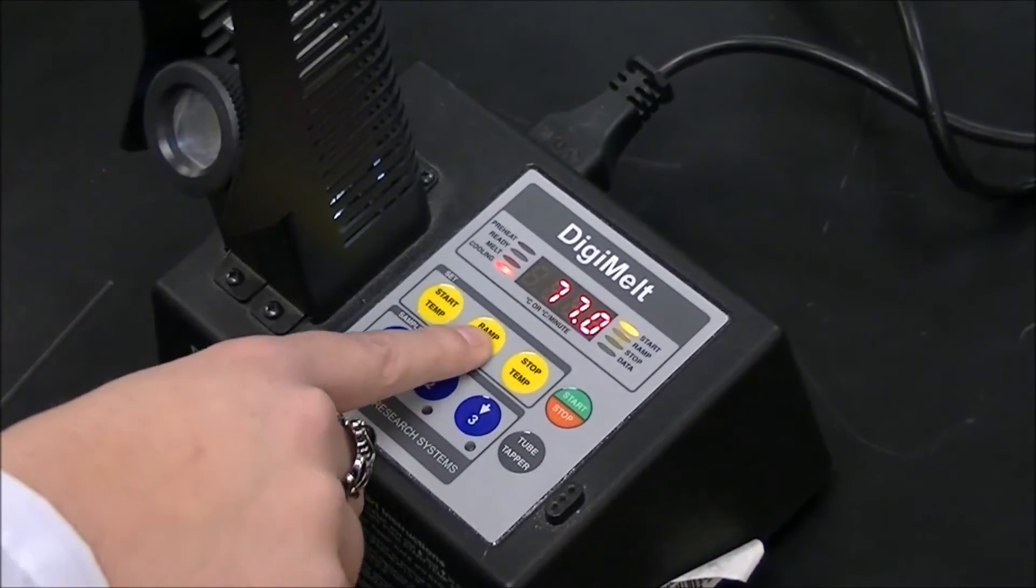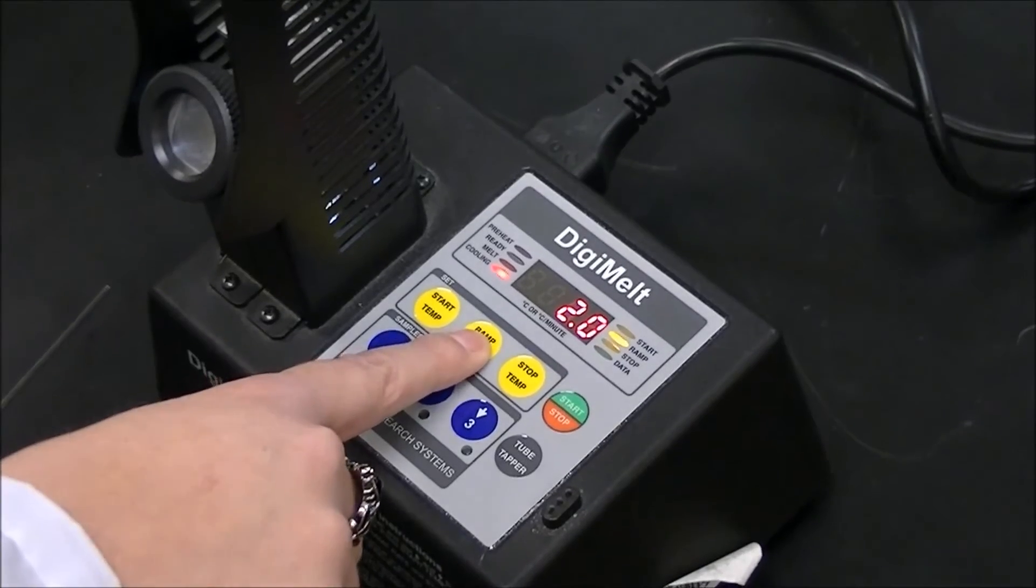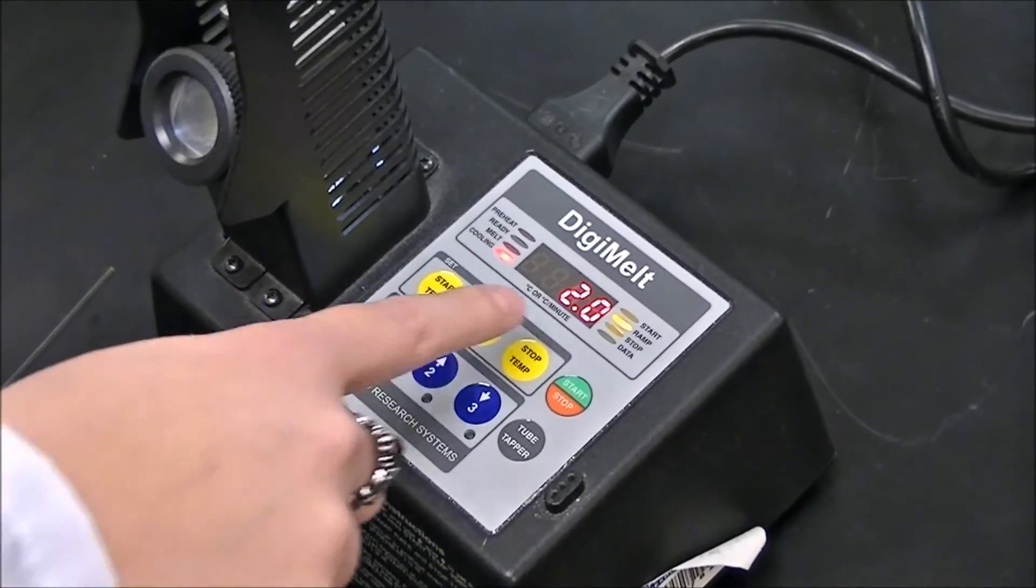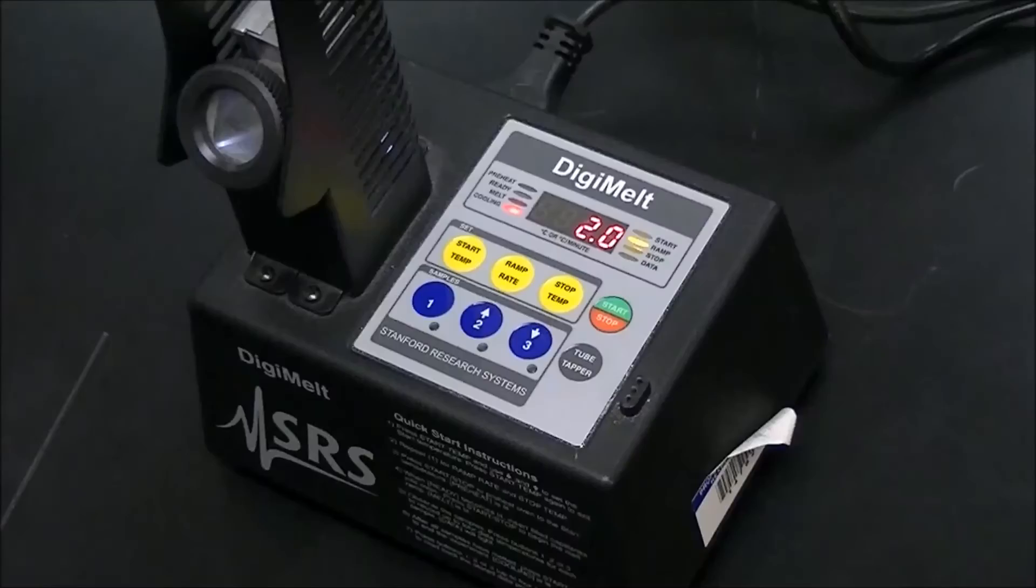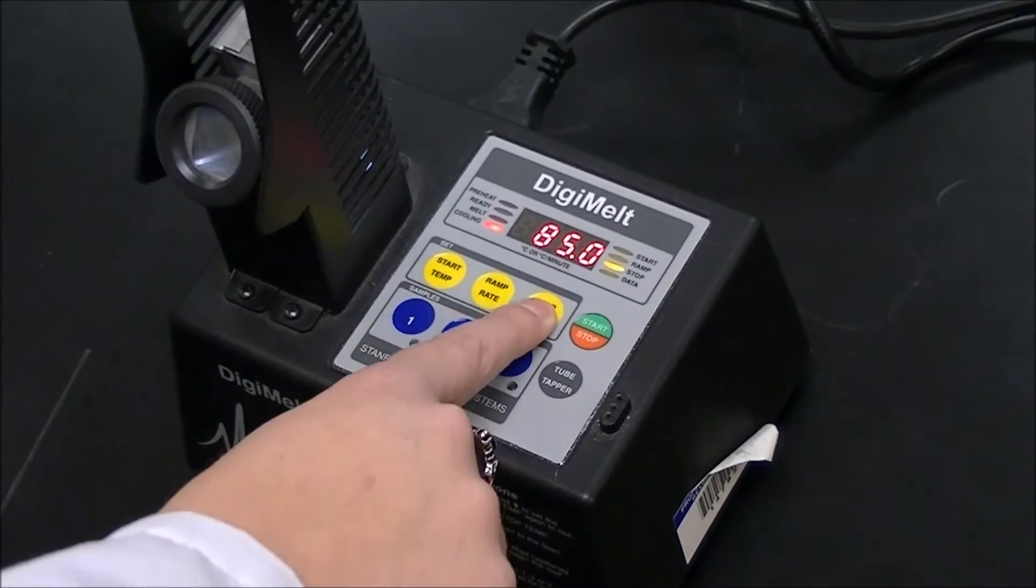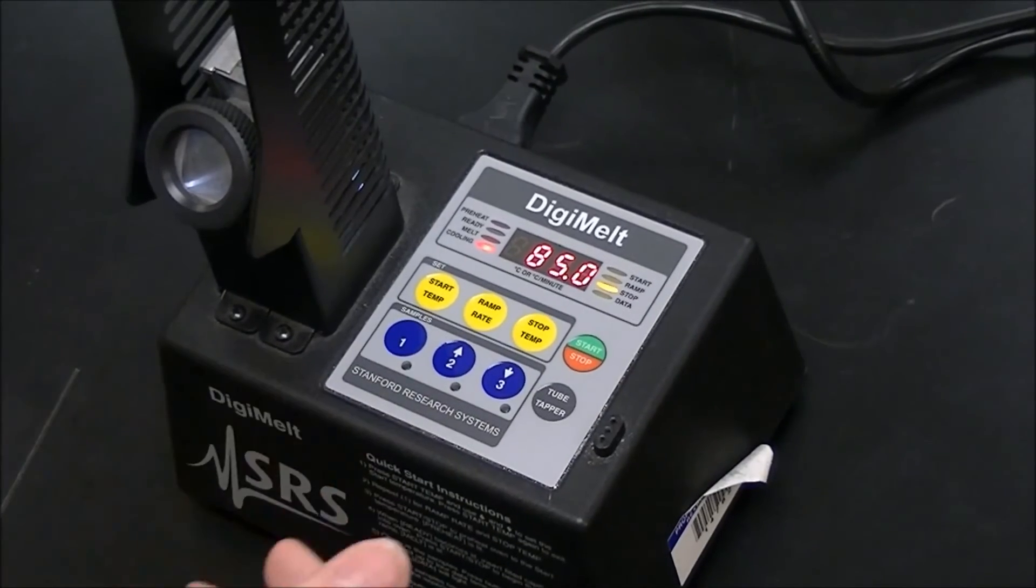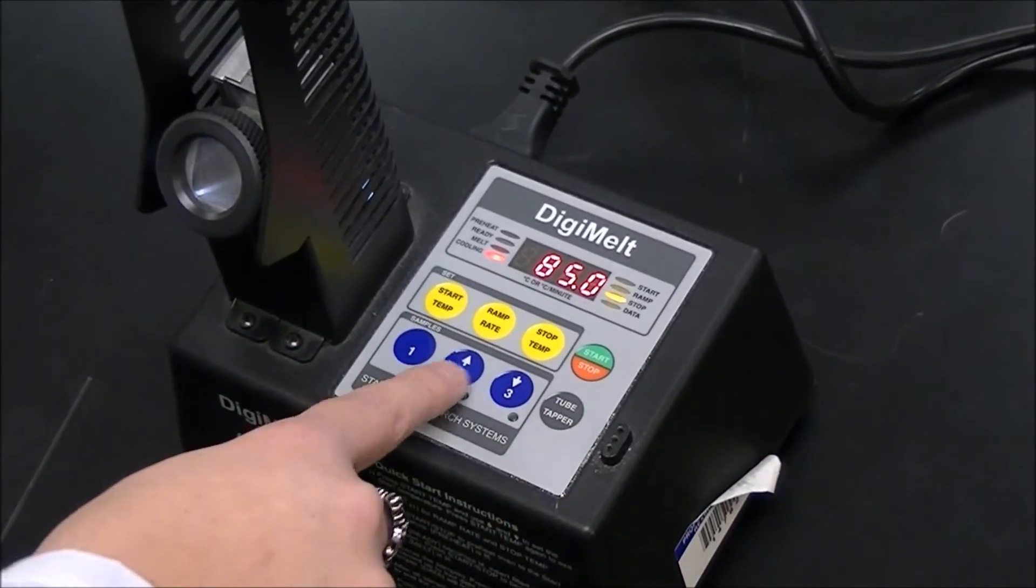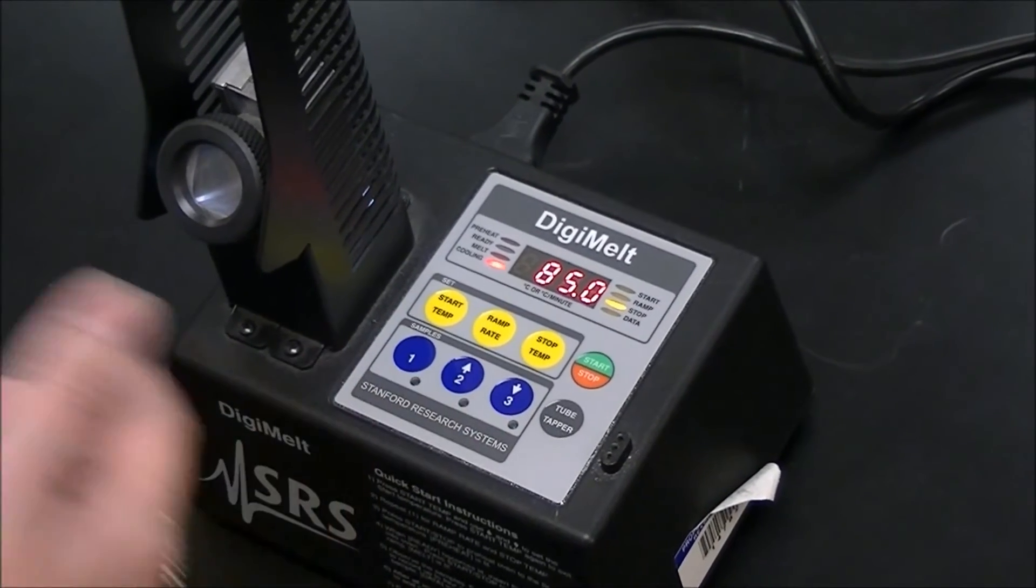Next you're going to push ramp rate, and this is how many degrees per minute the temperature is going to increase. So typically 2 is good. Next you're going to press the stop temp, and this is the temperature that is slightly higher than the 83 degrees. So we have ours set to 85, but you can use the up arrow or down arrow to adjust as needed.